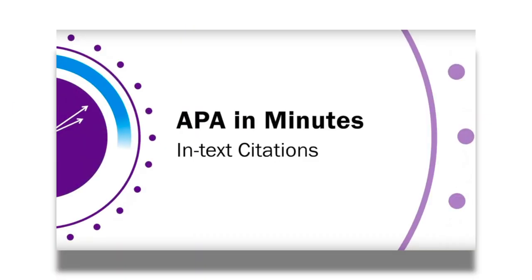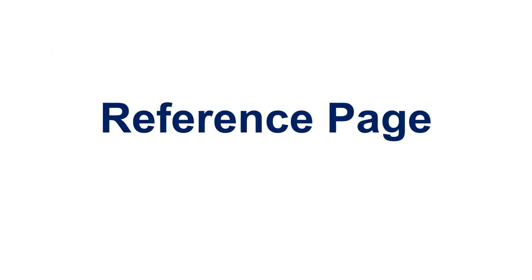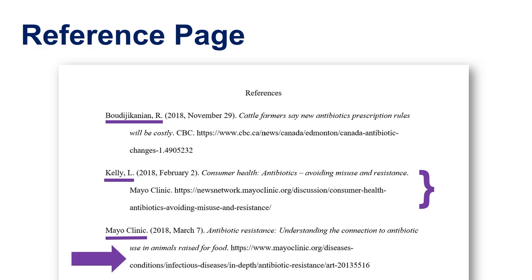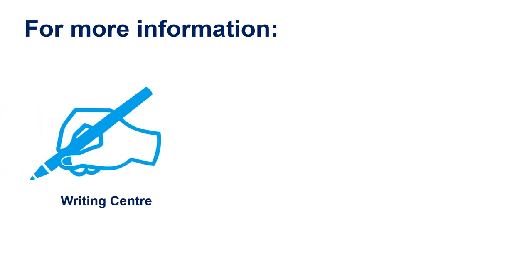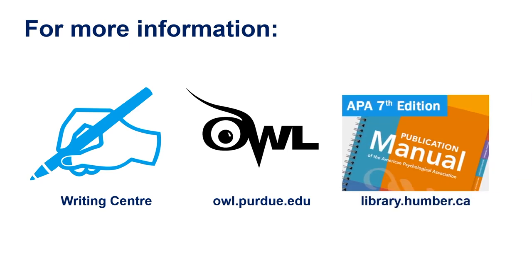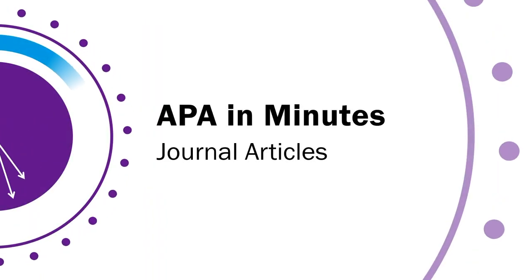For more on in-text citations, watch our video linked in the description. Your reference list is at the end of your paper. Make sure to put your citations in alphabetical order. Don't forget to double-space and indent after the first line. For more information and support with APA, book an appointment with the Writing Center, consult the OWL at Purdue, or refer to the APA resources available at Humber Libraries.